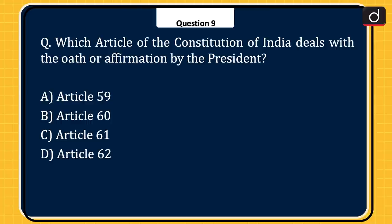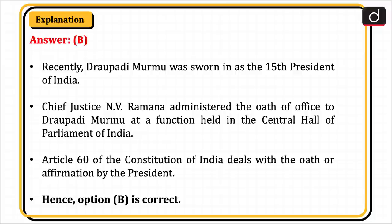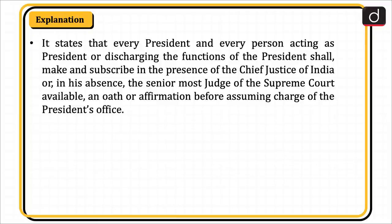Next question: which article of the Constitution of India deals with the oath or affirmation by the President? Article 59, Article 60, Article 61, or Article 62? The correct answer is option B, Article 60. Recently, Draupadi Murmu was sworn in as the 15th President of India. Chief Justice N.V. Ramana administered the oath of office at a function held in the Central Hall of Parliament. Article 60 states that every President shall make and subscribe an oath or affirmation in the presence of the Chief Justice of India, or in his absence, the senior-most judge of the Supreme Court available, before assuming charge of the President's office.